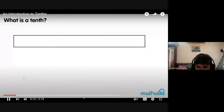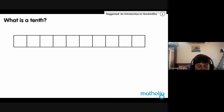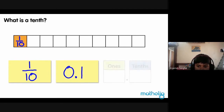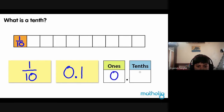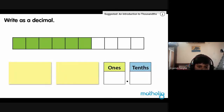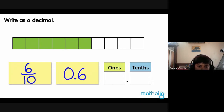What is a tenth? We can draw a rectangle to represent one whole. We can then divide the rectangle into ten equal parts. Colouring one of the ten parts gives us the fraction one-tenth. We can also write one-tenth as the decimal number 0.1. We can show one-tenth on a place value chart — there are zero ones and one-tenth. Six-tenths are coloured — we can also write this as the decimal 0.6. There are zero ones and six-tenths.